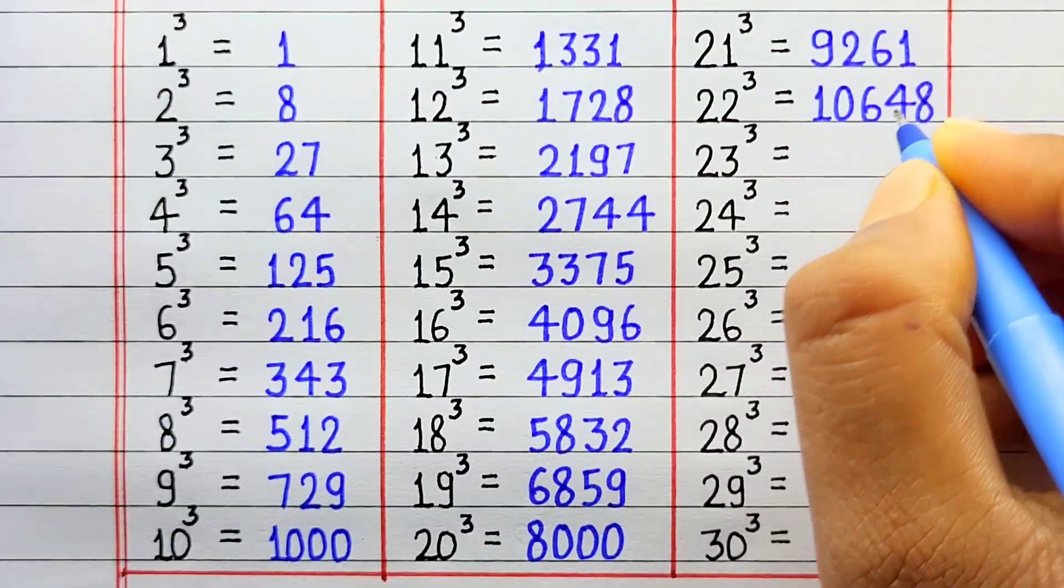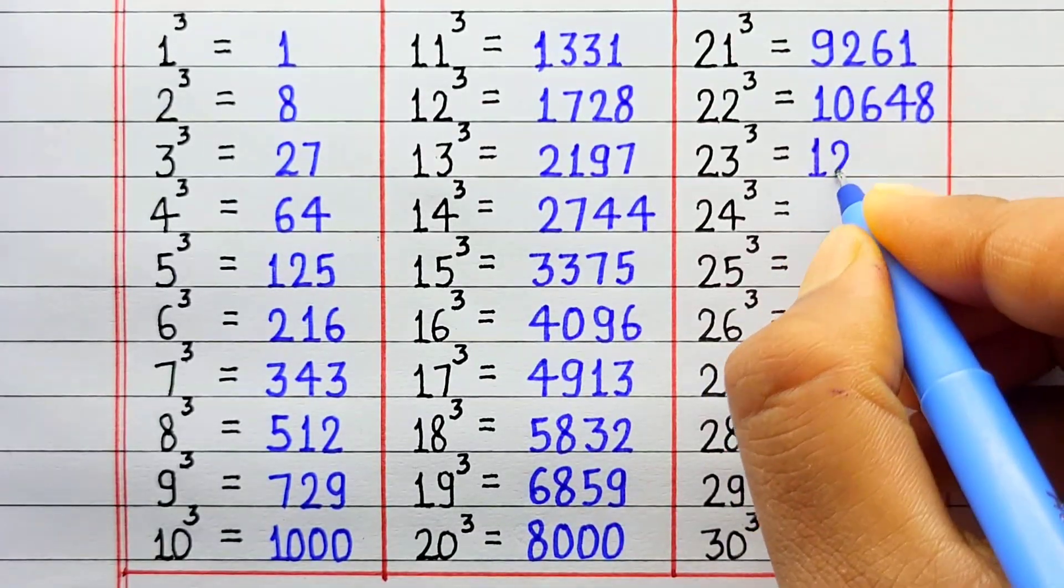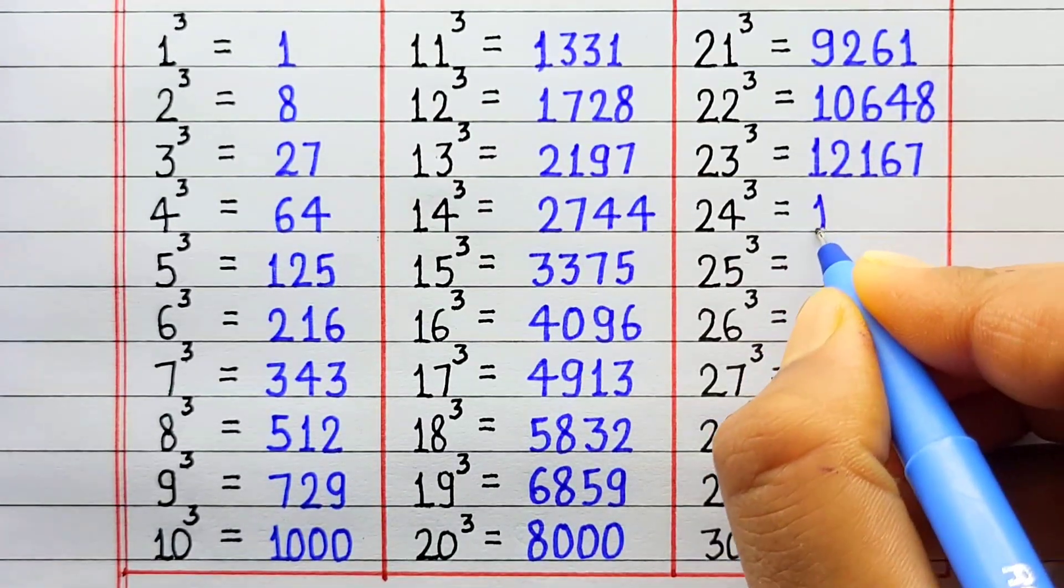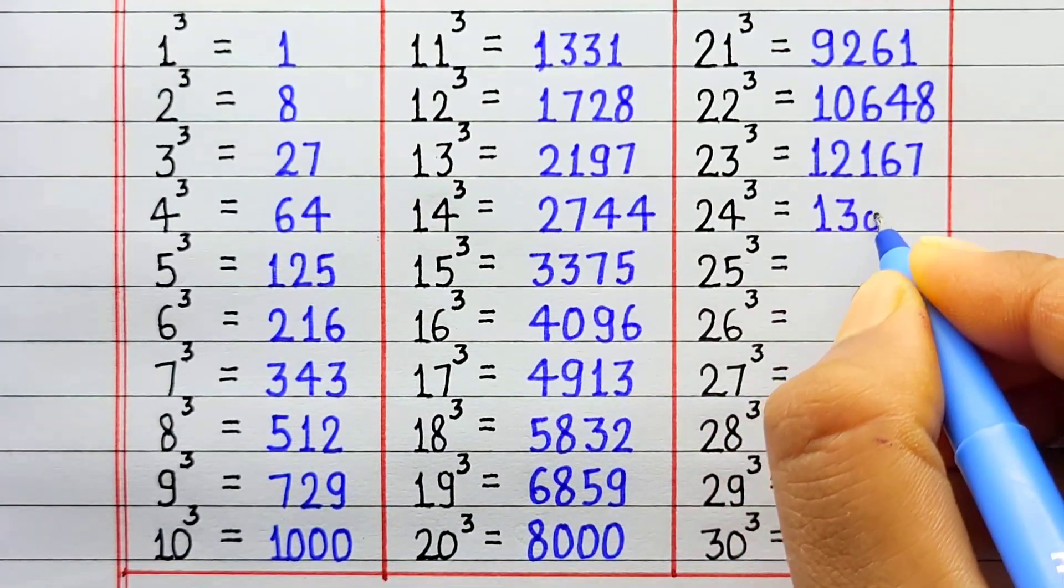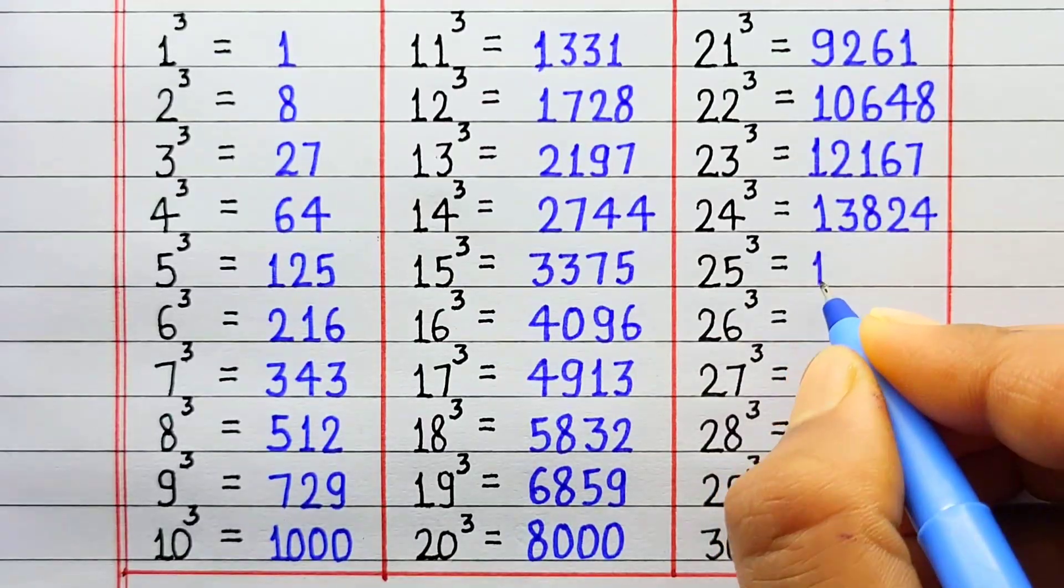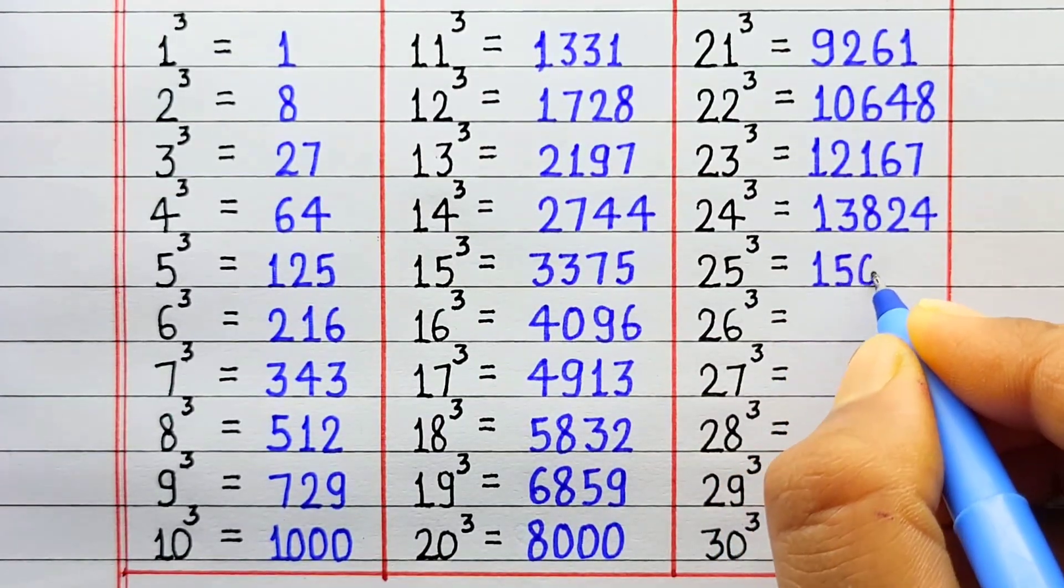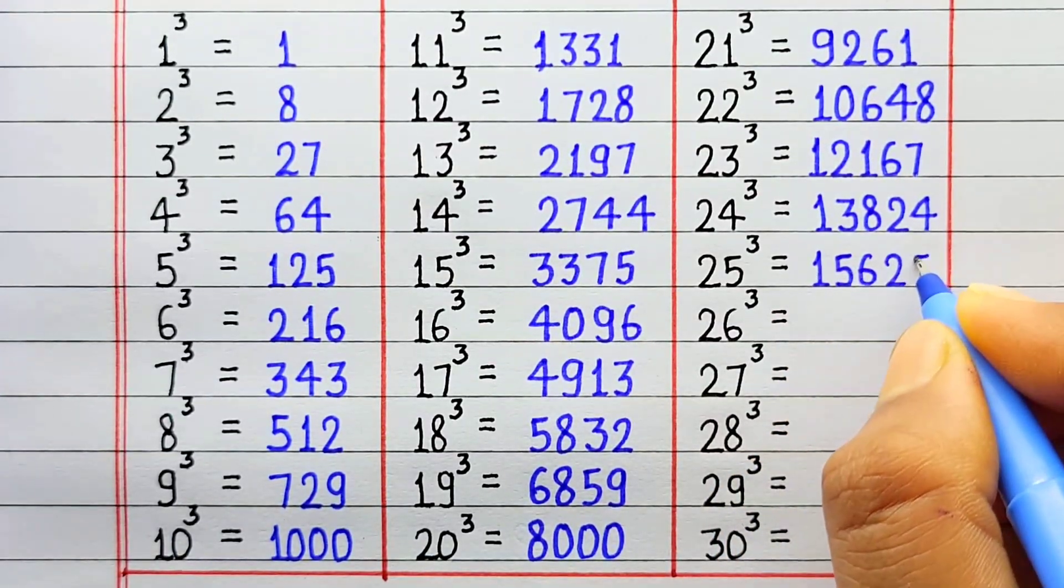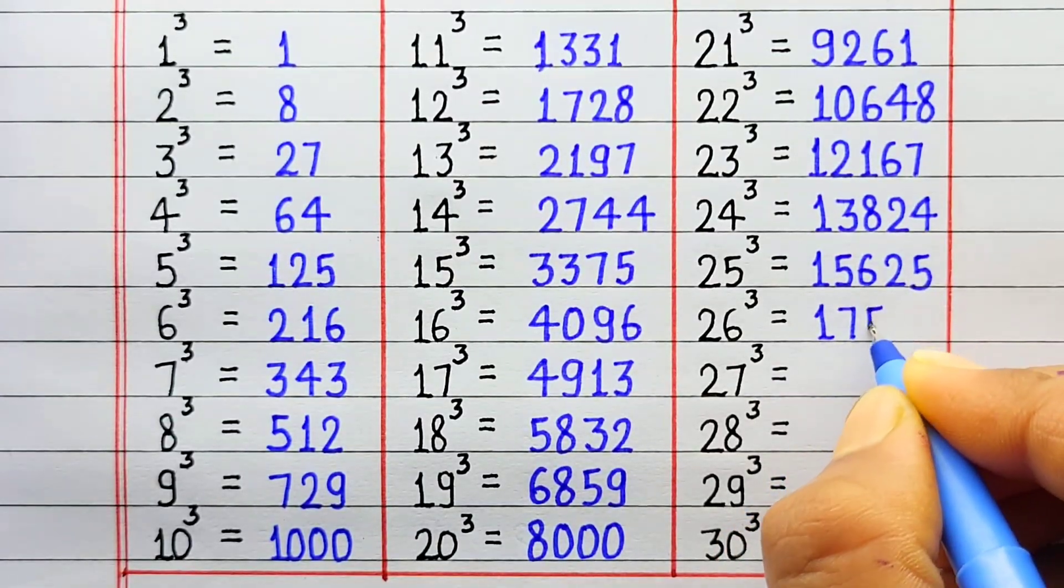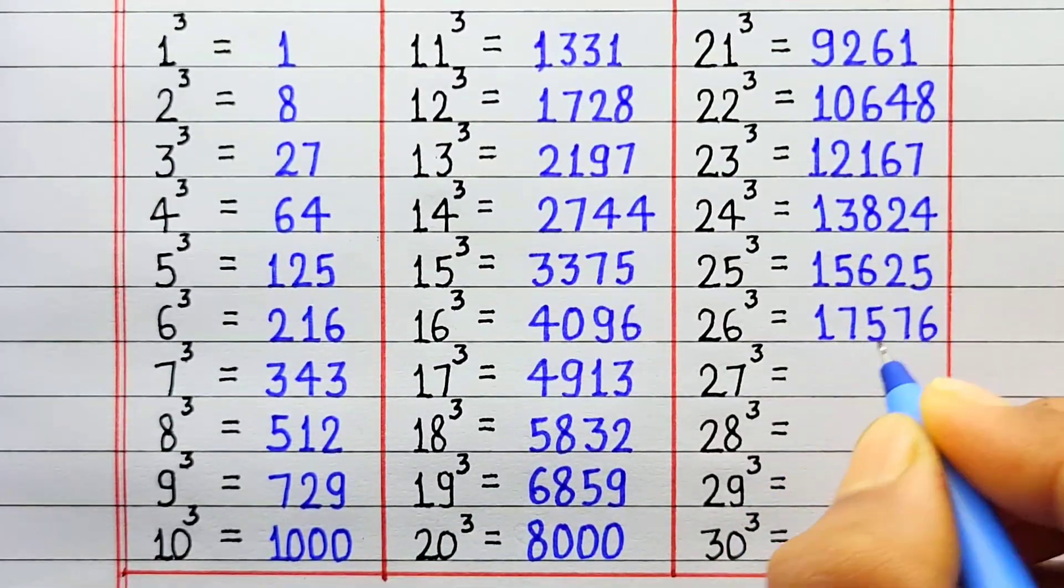Cube of 23 is 12167. Cube of 24 is 133824. Cube of 25 is 15625. Cube of 26 is 17576.